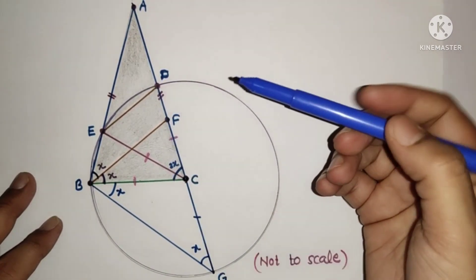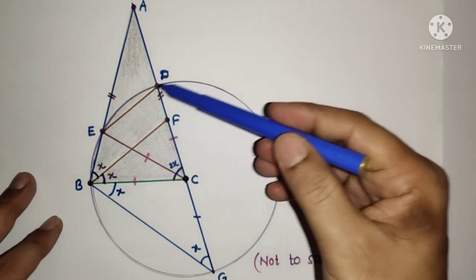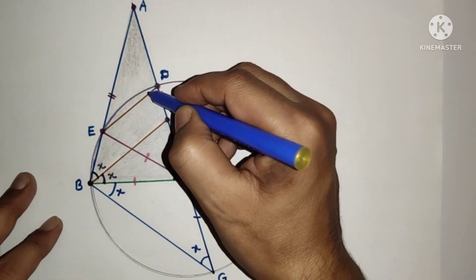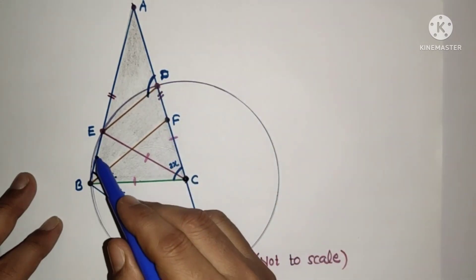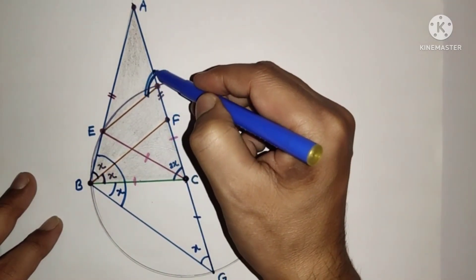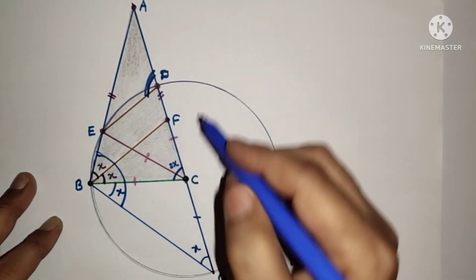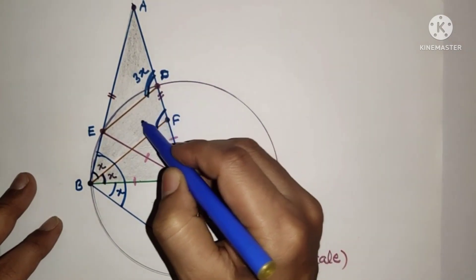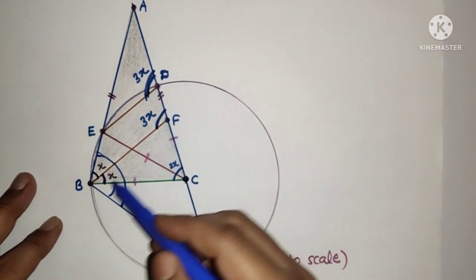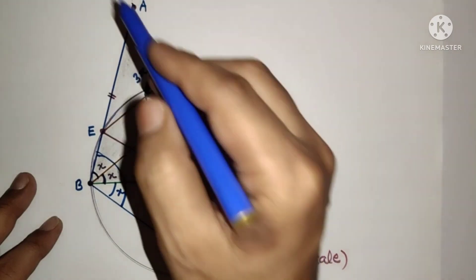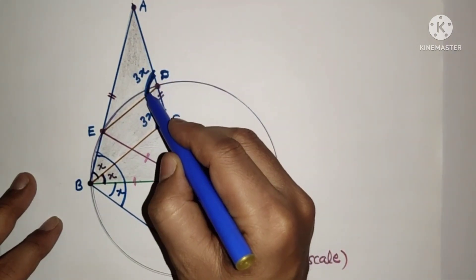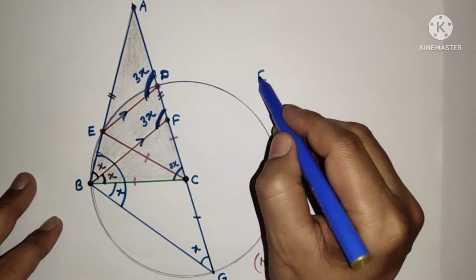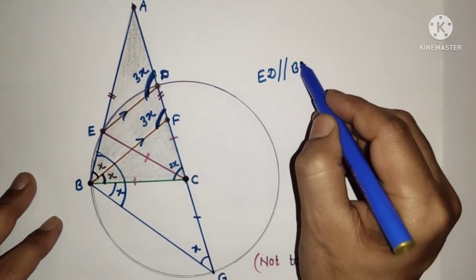Consider cyclic quadrilateral DEBG. In a cyclic quadrilateral, an exterior angle equals its opposite interior angle. The exterior angle equals 3x, and this equals angle EBG which is x plus x equals 3x confirms the result. Since angle BFD is 3x and angle EDA is 3x, these corresponding angles are equal, therefore ED is parallel to BF. Hence it is proved.